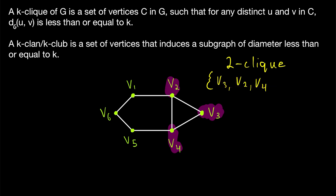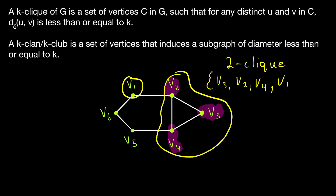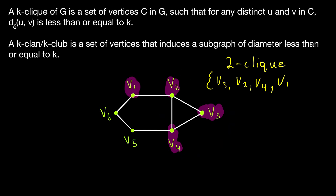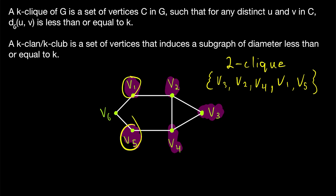However, we could still add some more vertices. Remember that some sources define K-cliques as being maximal. So in some papers that require K-cliques to be maximal, this would not be a two-clique because we could still extend it by including another vertex. For example, we could include the vertex V1. The distance between V1 and all the other vertices in our two-clique is less than or equal to two. Still, the two-clique is not maximal — we could still include one more vertex, the vertex V5.